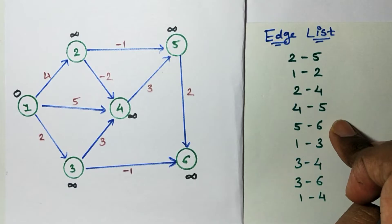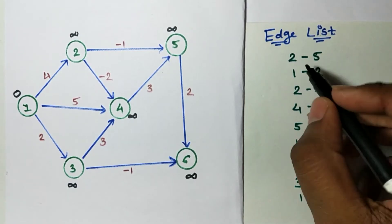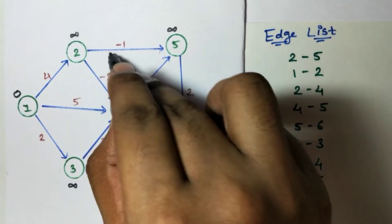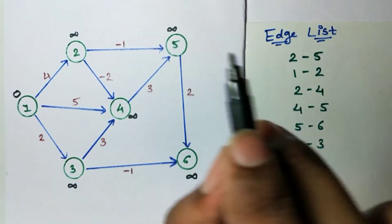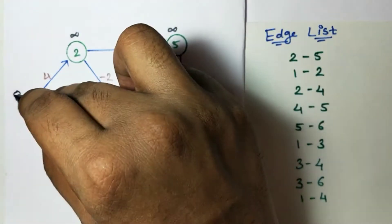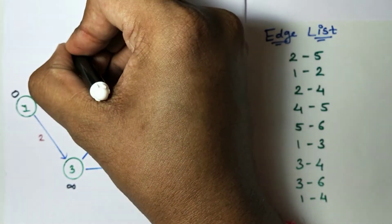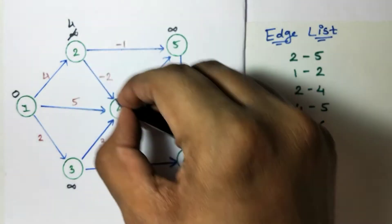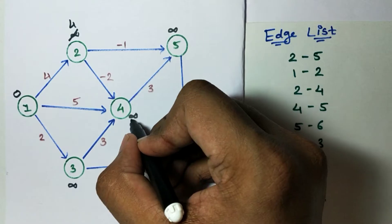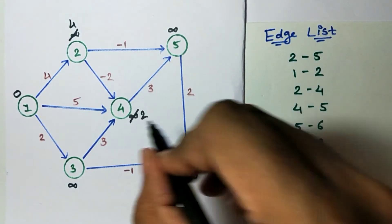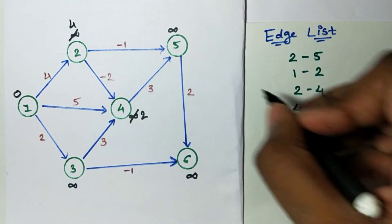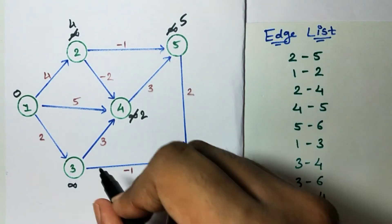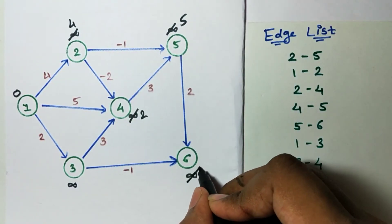First edge is 2 to 5: infinity minus 1 is infinity, don't change it. Edge 1 to 2: 0 plus 4 is 4, which is smaller than infinity, change it to 4. Edge 2 to 4: 4 minus 2 is 2, smaller than infinity, change. Edge 4 to 5: 2 plus 3 is 5, smaller than infinity, change. Edge 5 to 6: 5 plus 2 is 7, smaller than infinity, change.